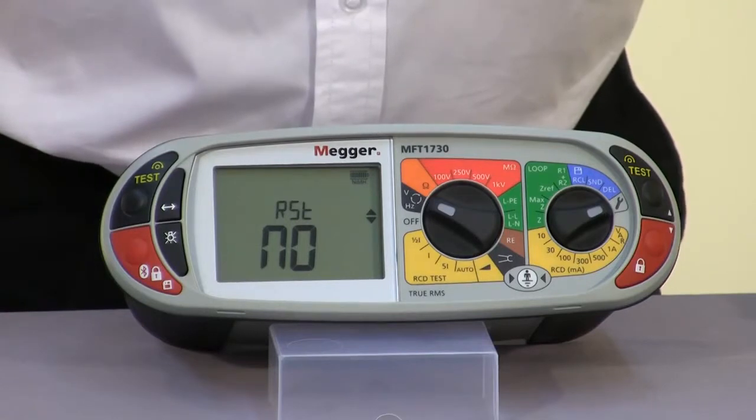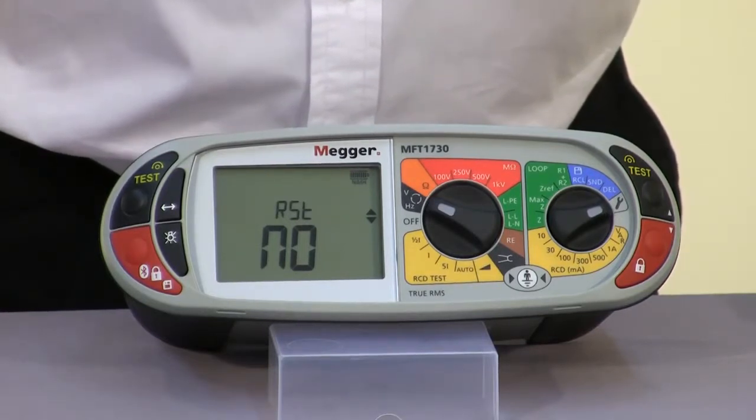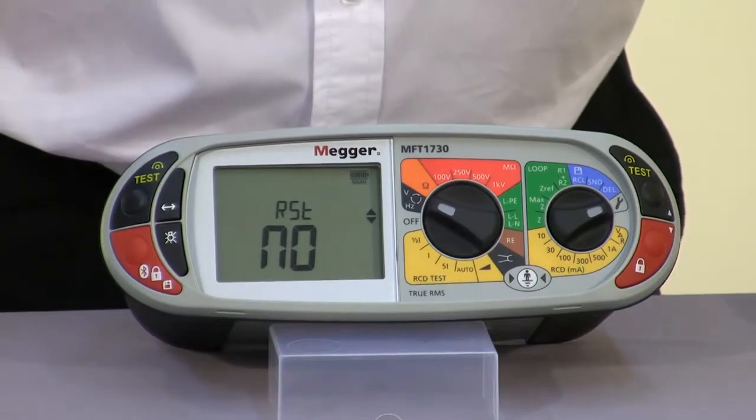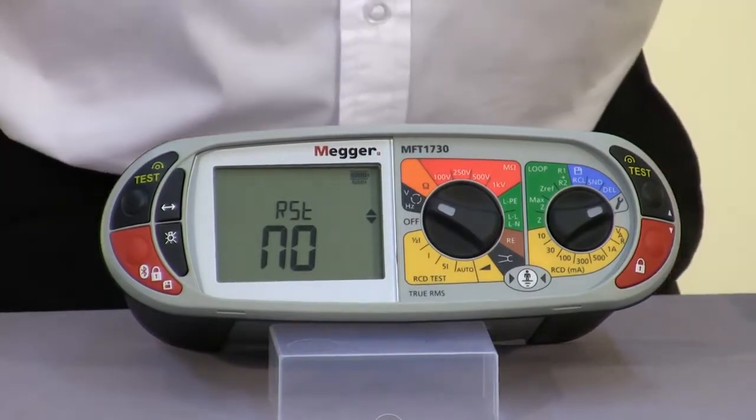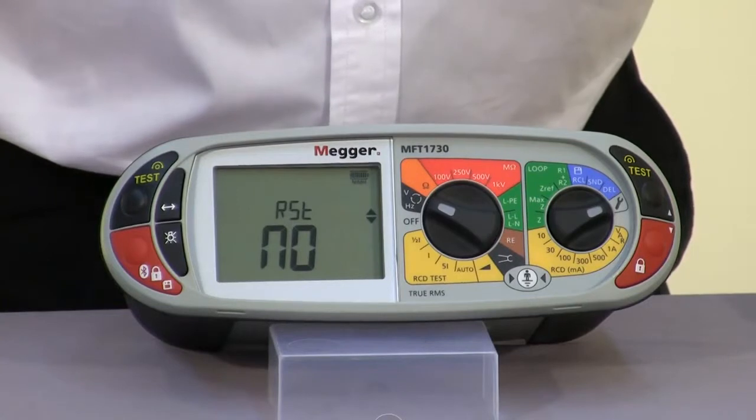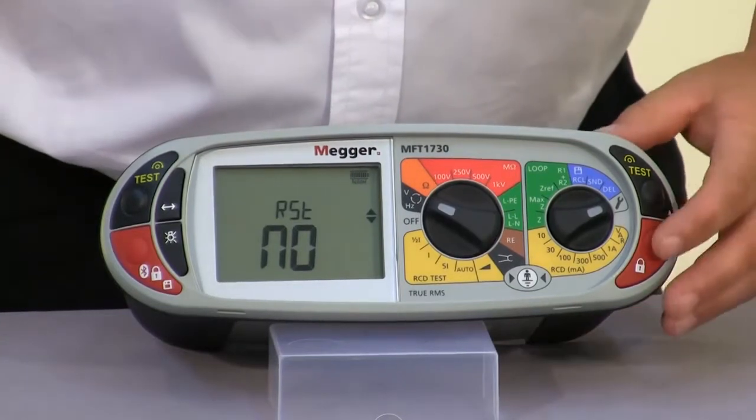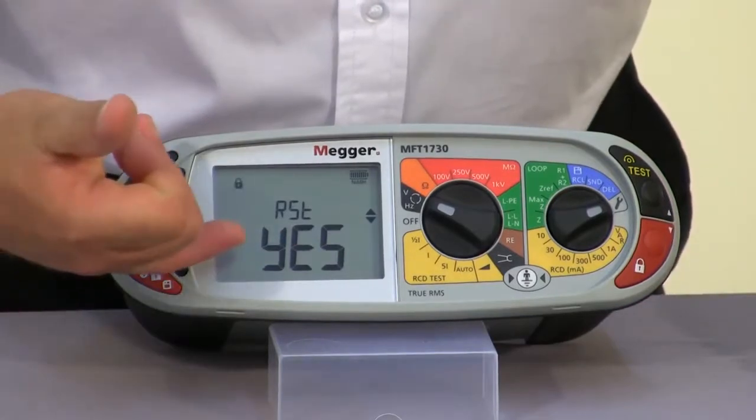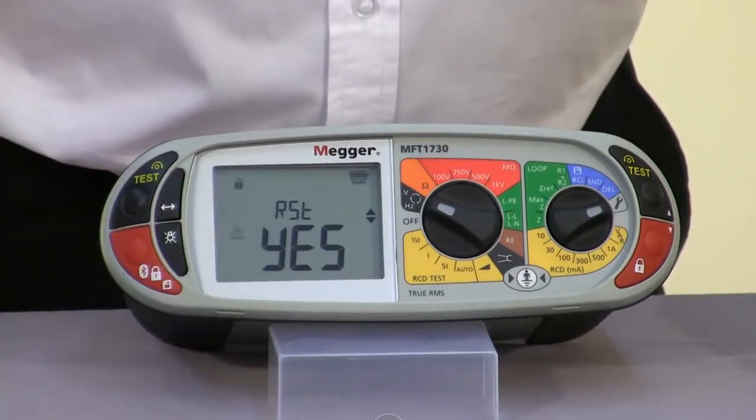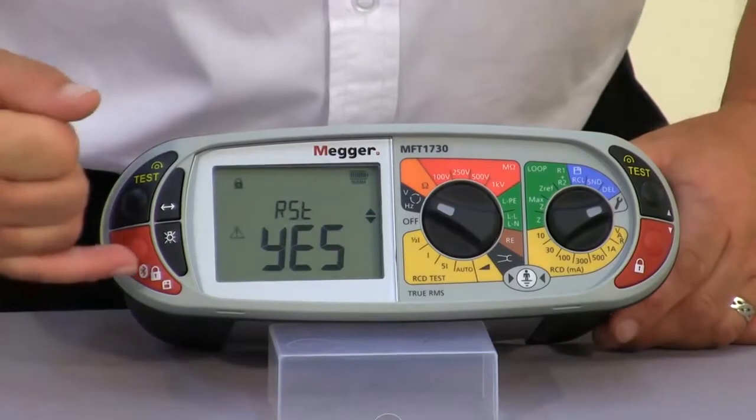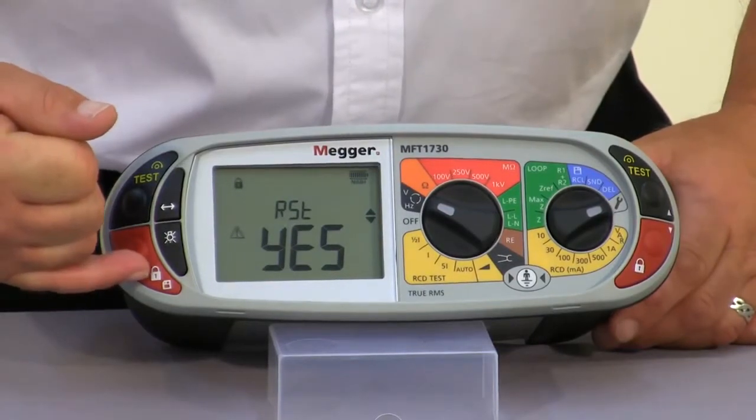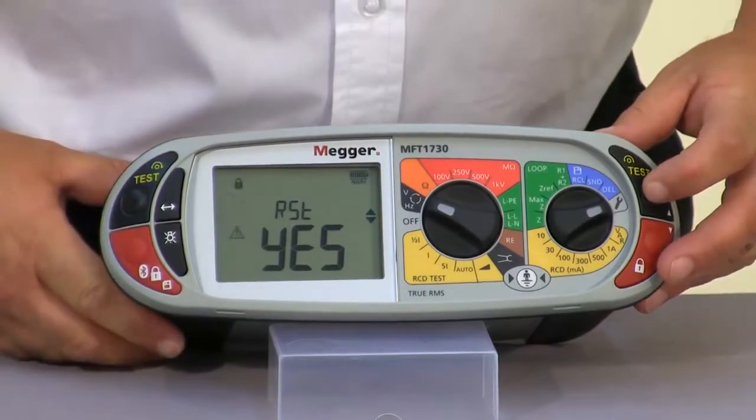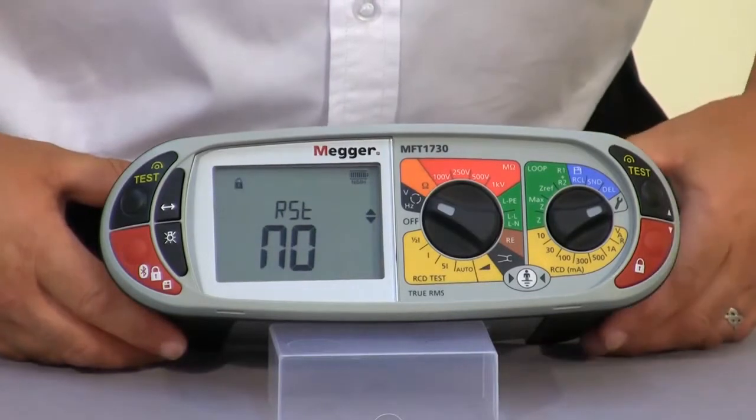The RST at the moment is selected to no. This is in essence a reset, a factory reset facility. If we wanted to carry out the factory reset, we press either one of the up or down buttons, and you'll see that now we have yes displayed, and we have to initiate a save at this point by pressing the save button. I'm not going to reset at this point, so I'm going to select no.